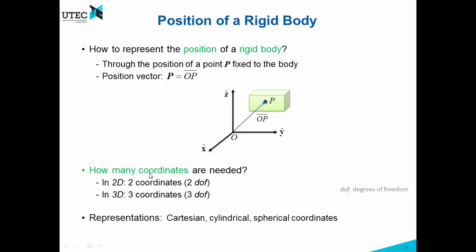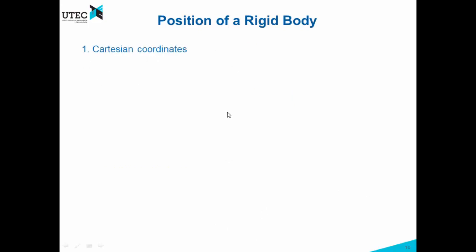There are several forms of representation, for example, Cartesian, cylindrical, or spherical coordinates. First, the Cartesian coordinates, which are the most obvious ones. We have here the reference frame, we have the point P, and we have the coordinates X, Y, and Z, which gives a vector.